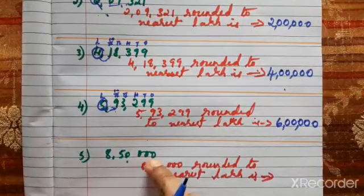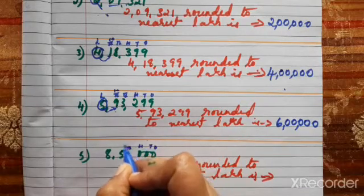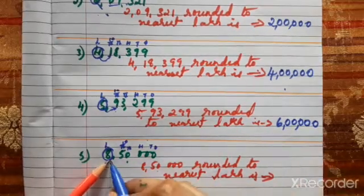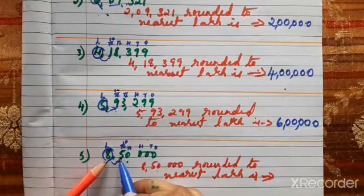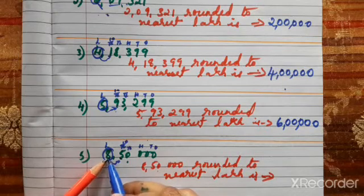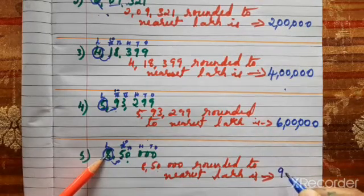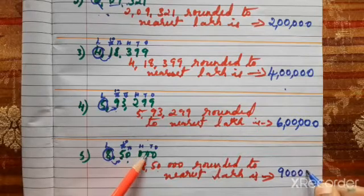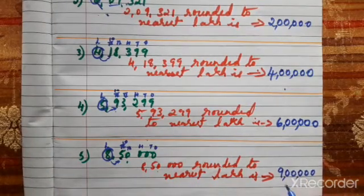Now 5th question: 8,50,000 we have to round off nearest to lakhs place. First check the place value: ones, tens, hundreds, thousands, ten-thousands, and lakhs — 8 is in the lakhs place. Knock the door and ask: do you have 5 rupees or more than 5? The next number is 5, so 5 can help — 1 is given to 8, so 8 plus 1 is 9. Once the door is knocked, 5 becomes 0 and all remaining digits become 0. So 8,50,000 rounded to nearest lakh is 9 lakhs.